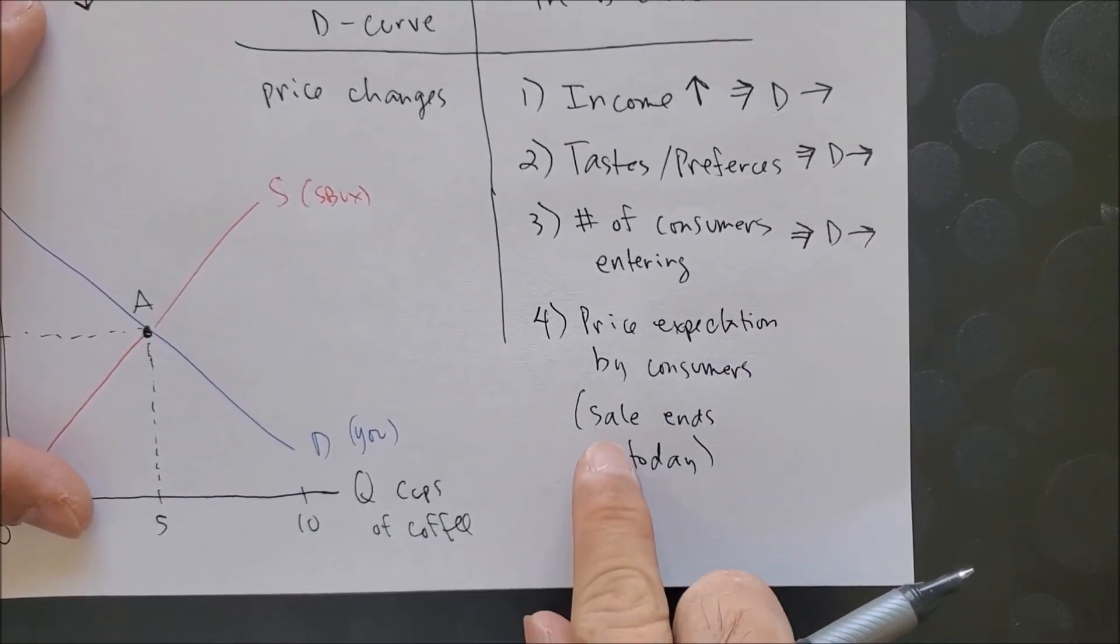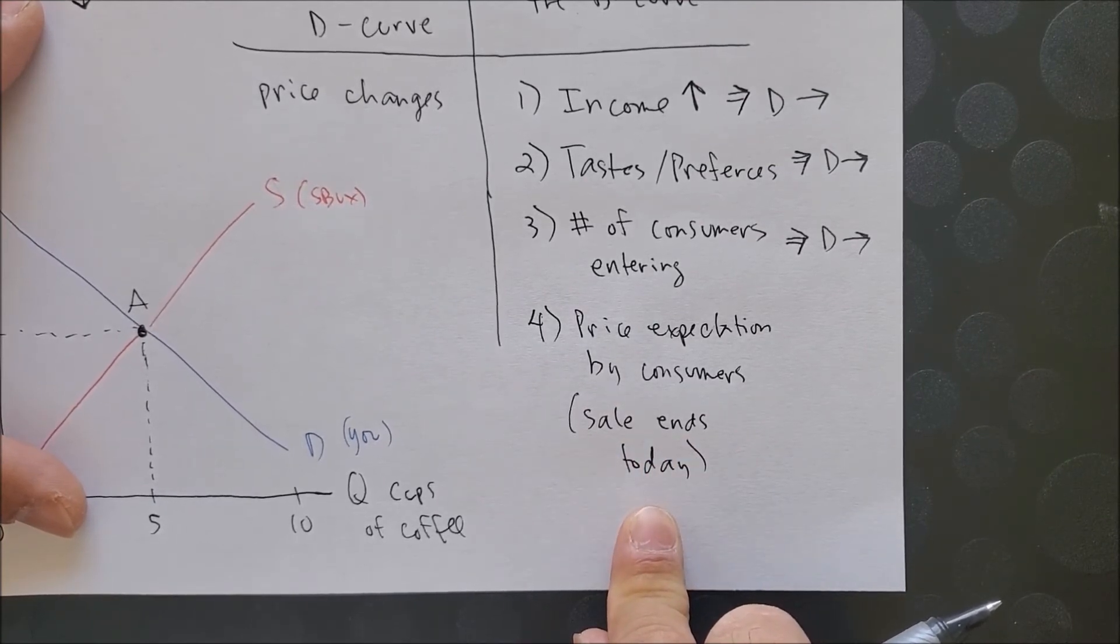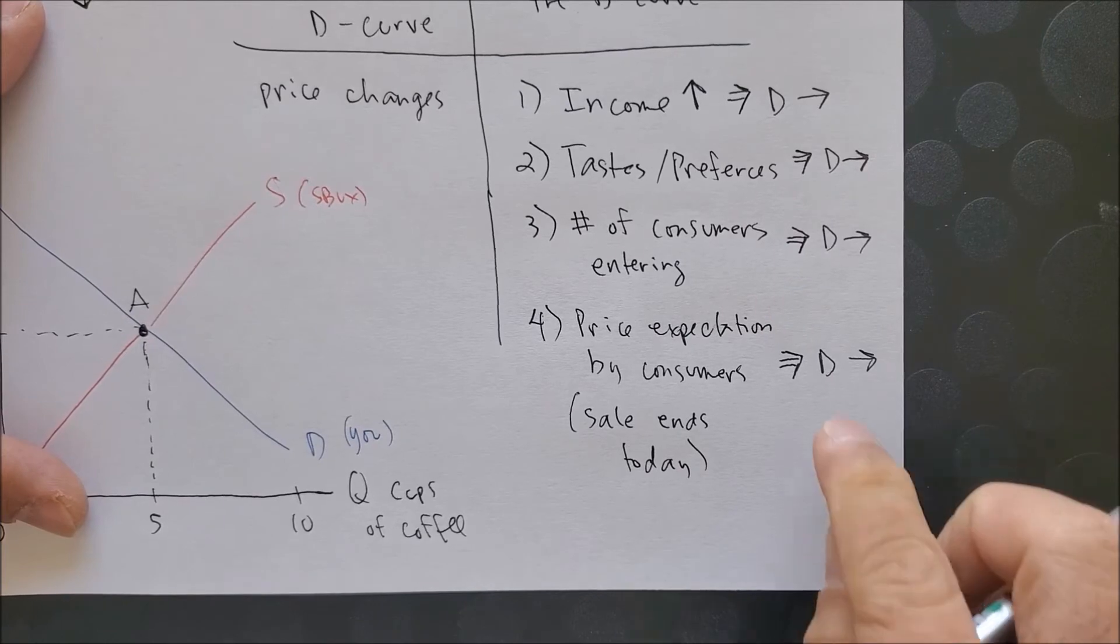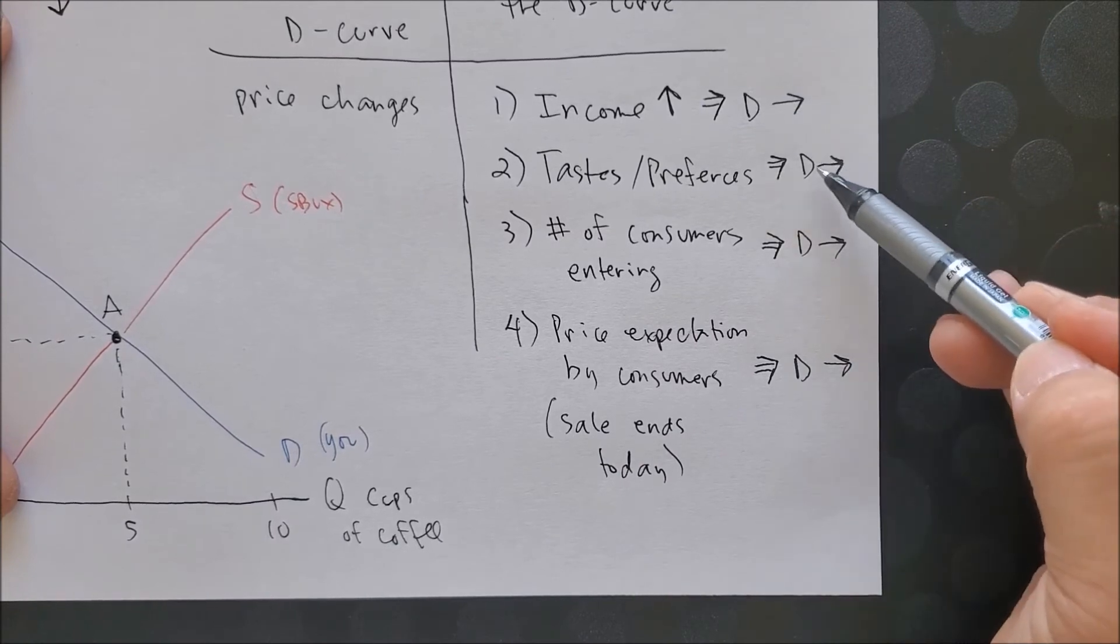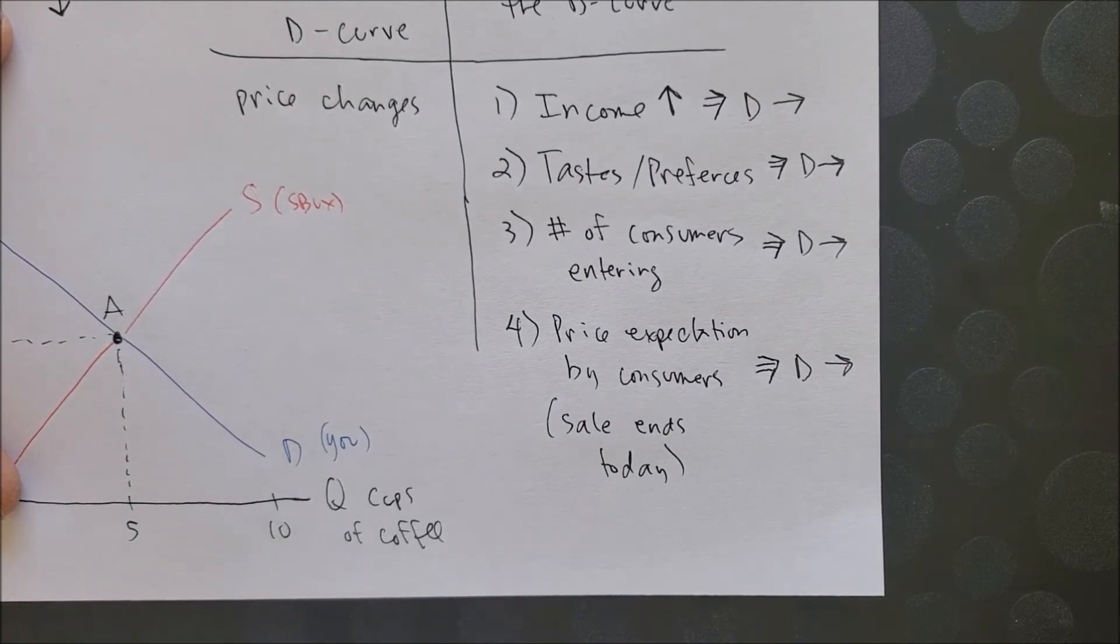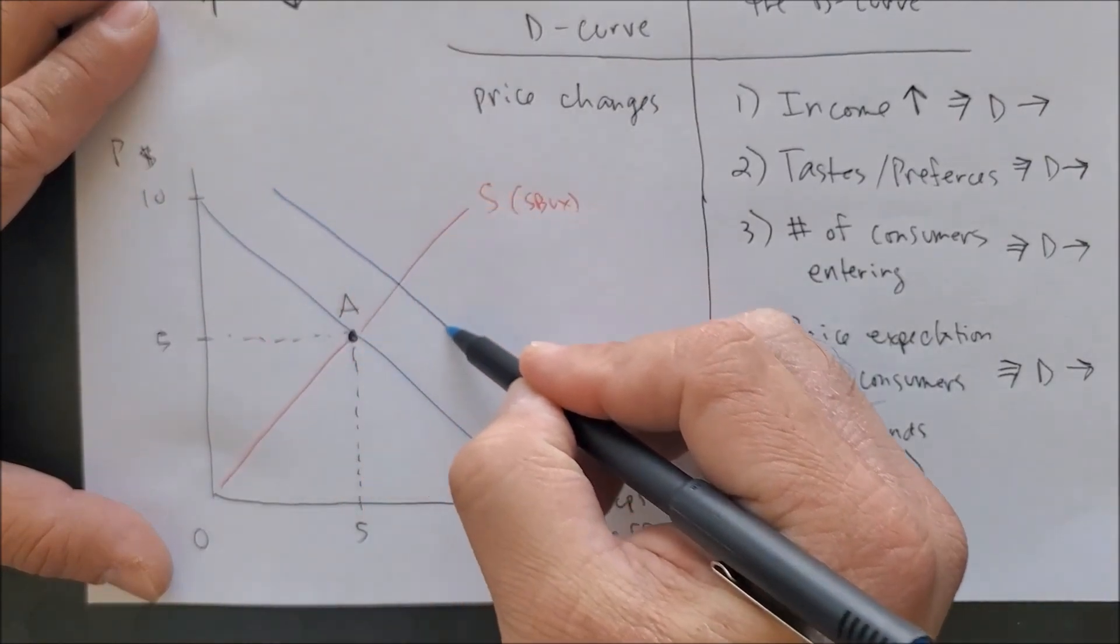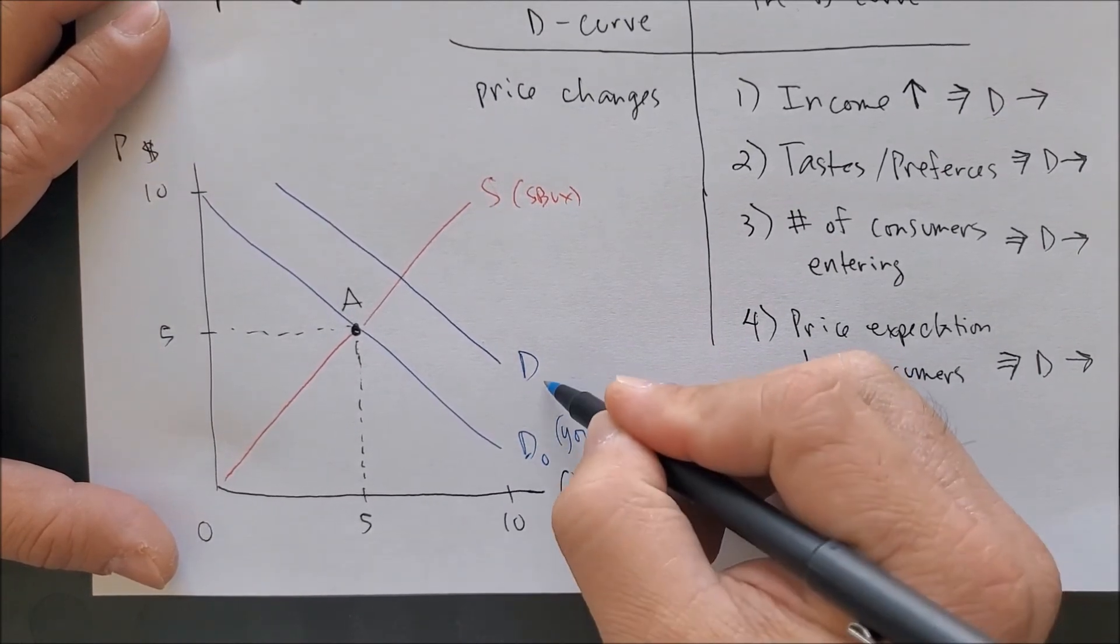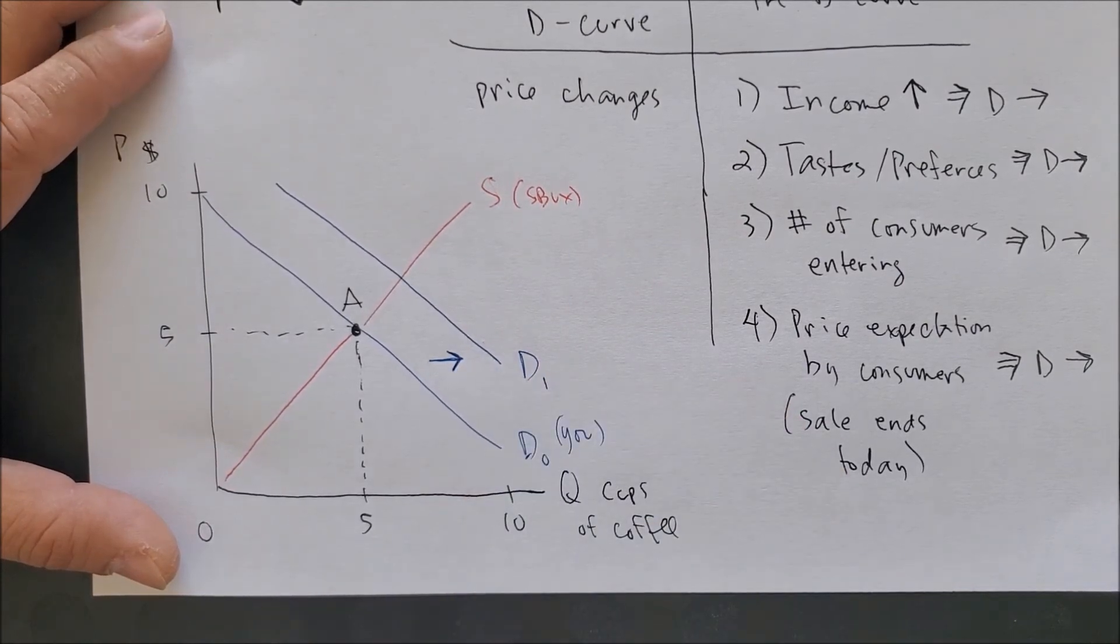If you know that the sale ends today and tomorrow it's going to be back at its original price, I think you are going to consume the good today. The demand curve will shift to the right. So all four of these factors are showing you that the demand curve is going to shift to the right. And now we can see our graph and illustrate a demand curve shifting to the right. We can now call this D0, D1. This is clearly a demand shift to the right.